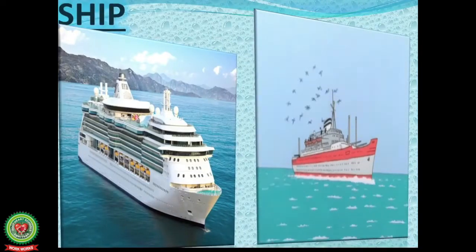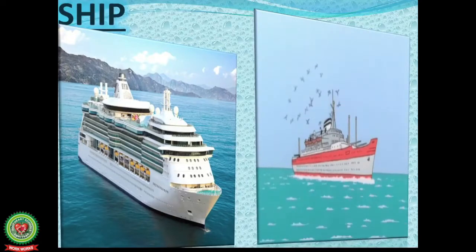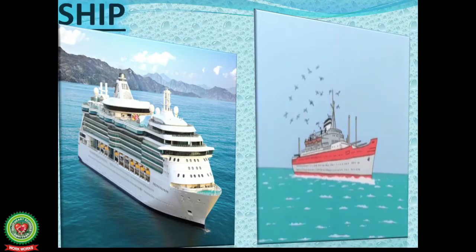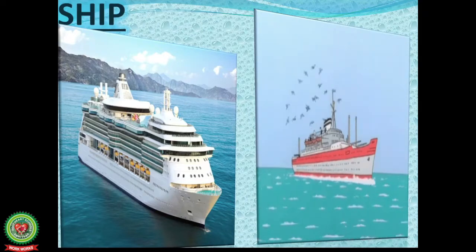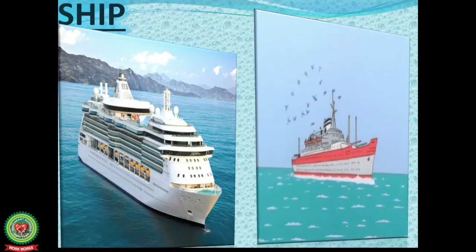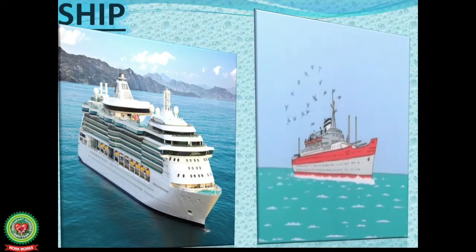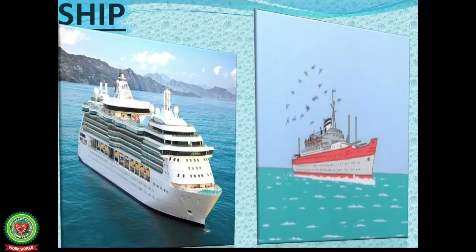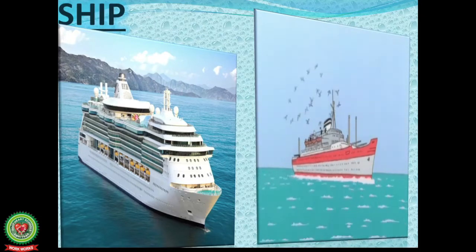Ship — it is big in size, so a large number of people can travel together in it. Ships use three types of fuel: heavy fuel oil, low fuel oil, and diesel oil. Different countries have different rules for burning fuel when the ship is at that place.